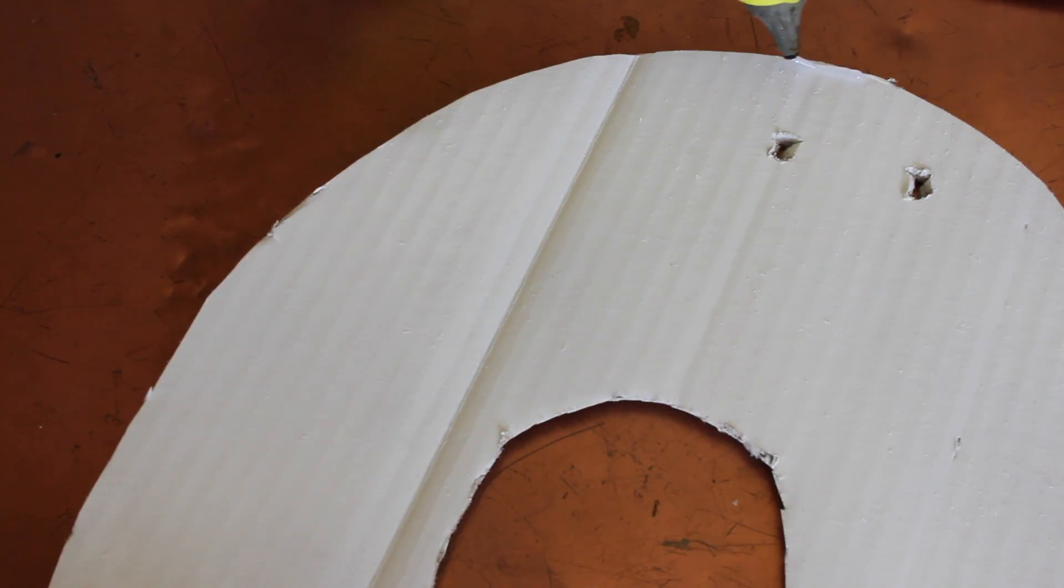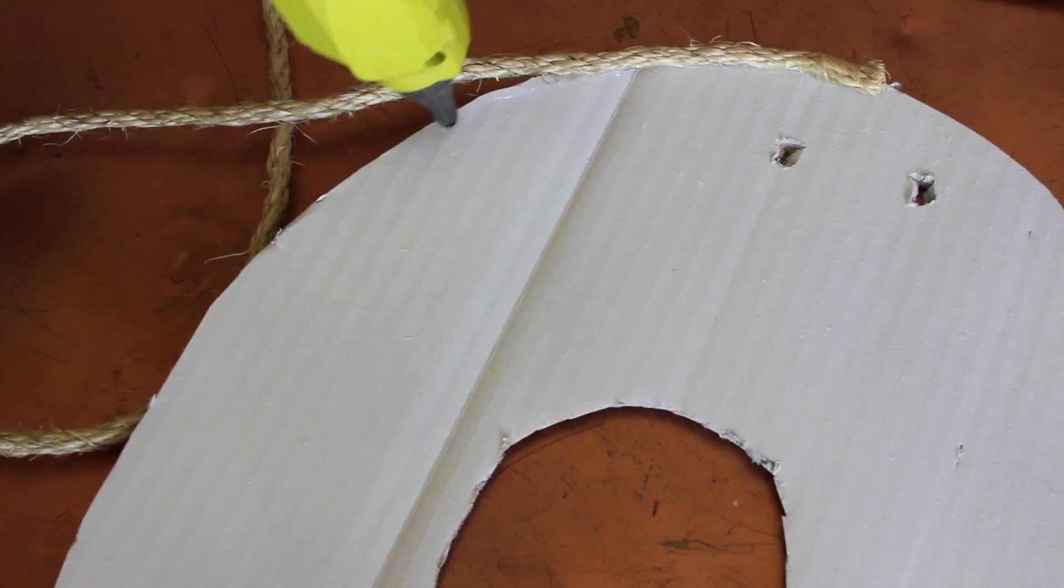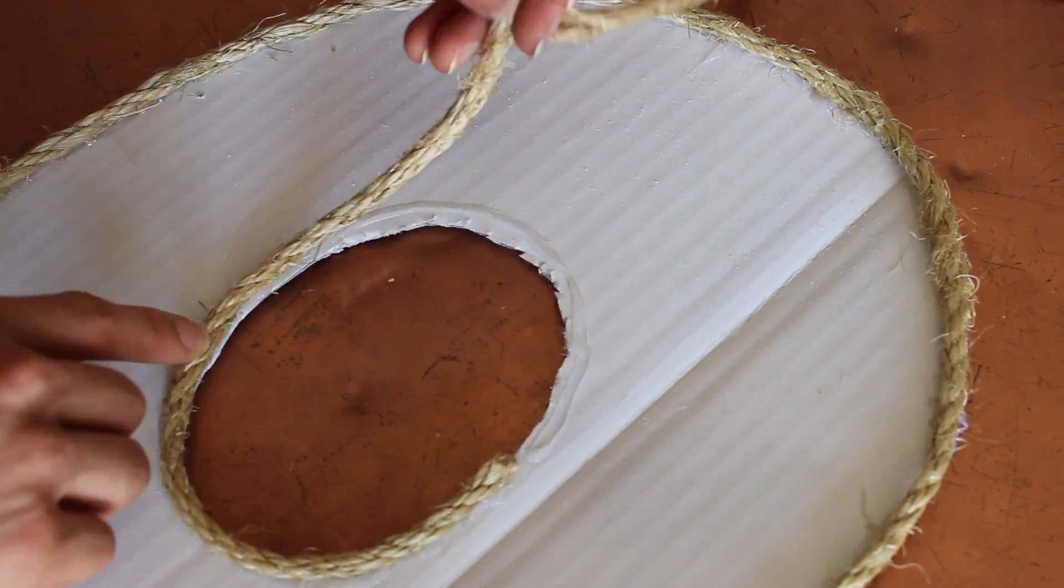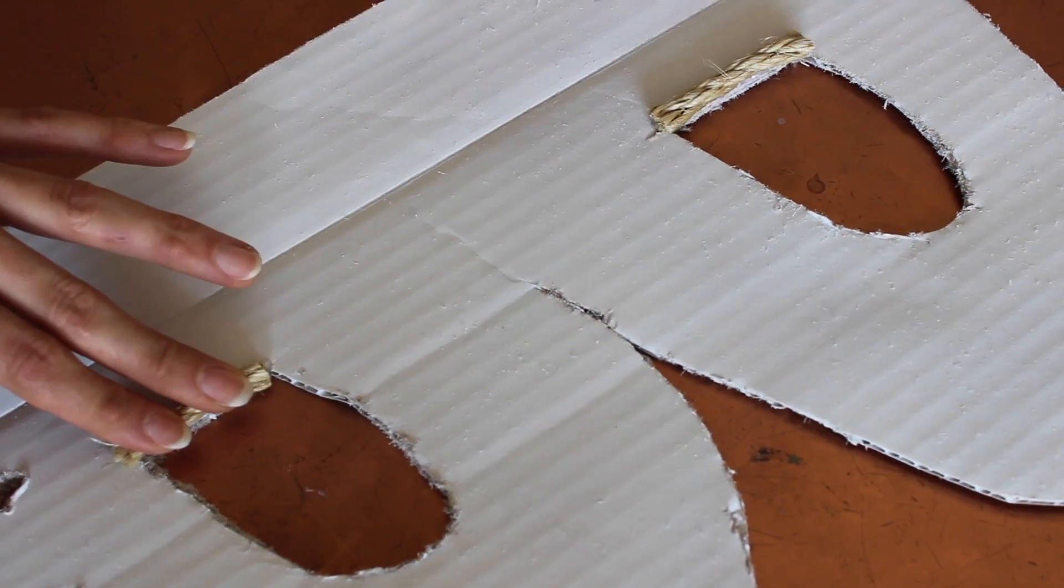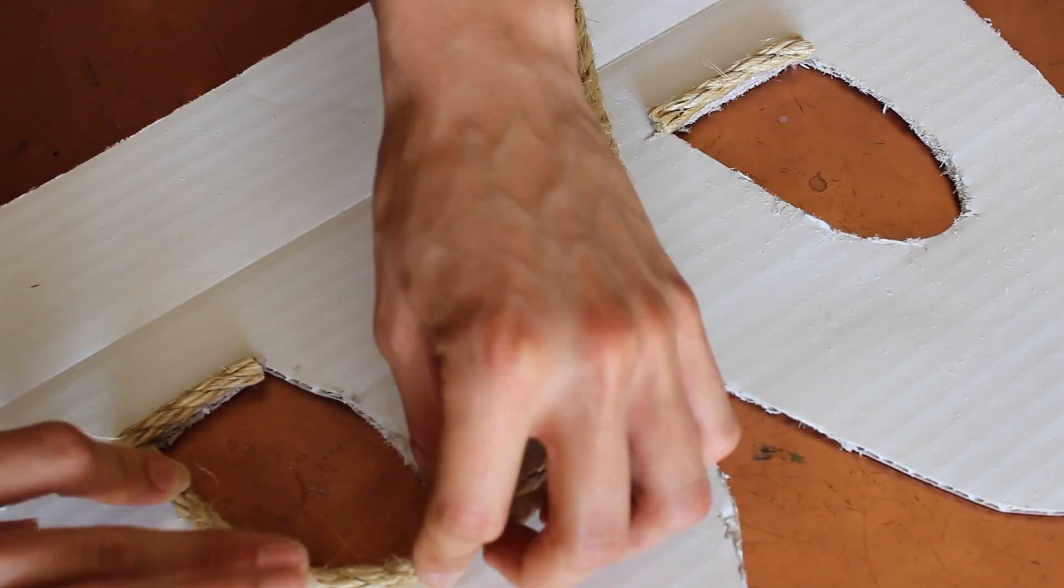Now you can obviously do whatever kind of trim that you want but you're just going to want to put a little tiny line of hot glue on the outside of the letters and closely follow with whatever trim you're using because it does dry pretty quickly.